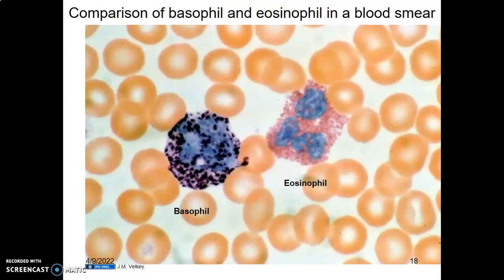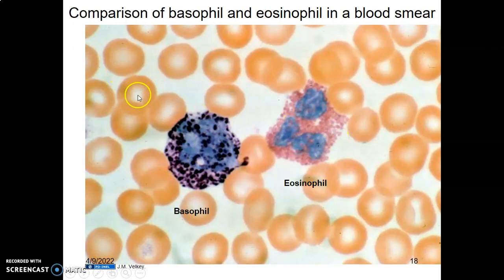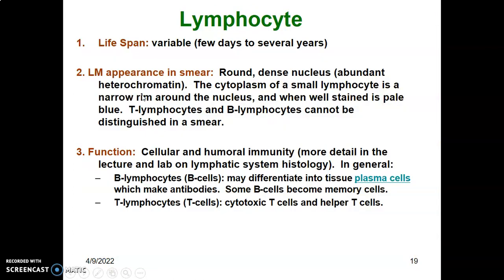Looking at the blood smear: the eosinophil has a pink-red cytoplasm with acidic granules, while the basophil has blue-purple granules. Both are bilobed, but in the basophil the granules obscure the nucleus so you can't see it very well. The red blood cells with clear central portions are also visible in the smear.